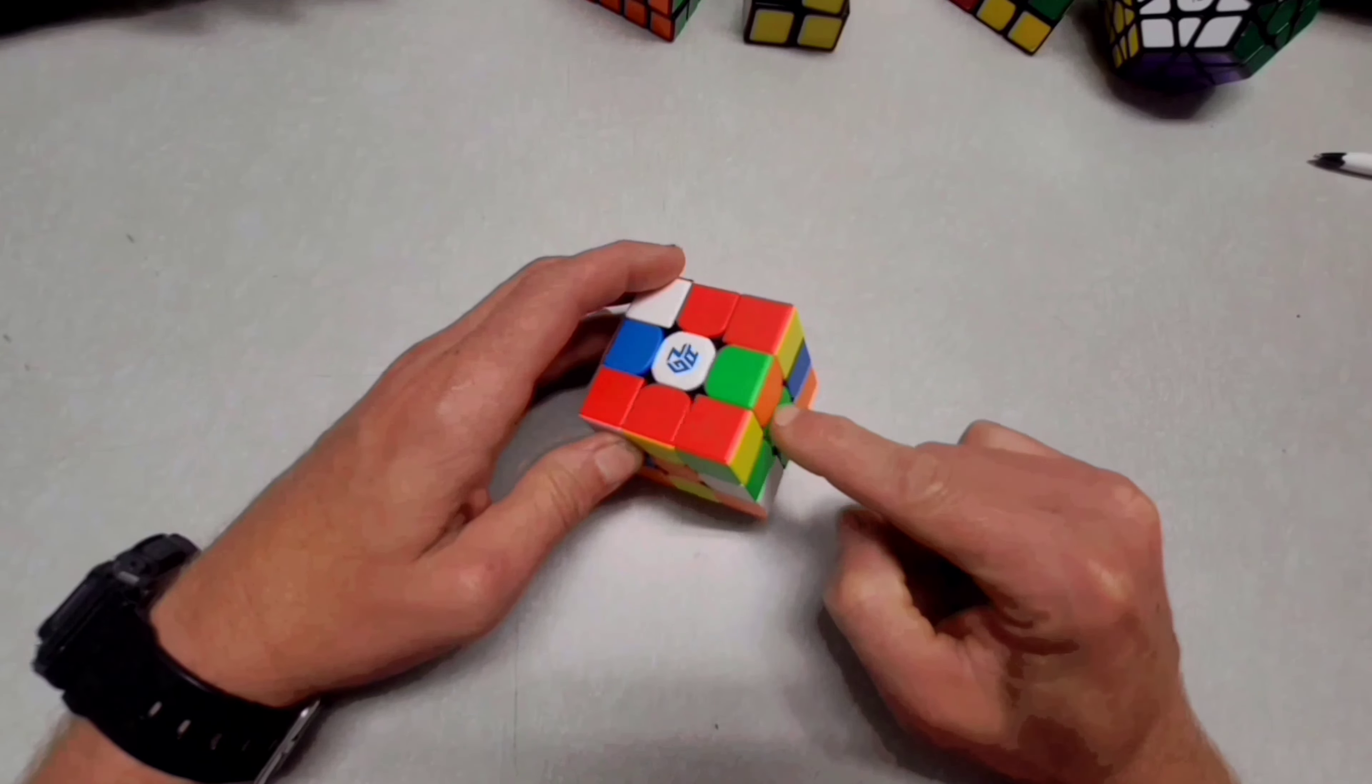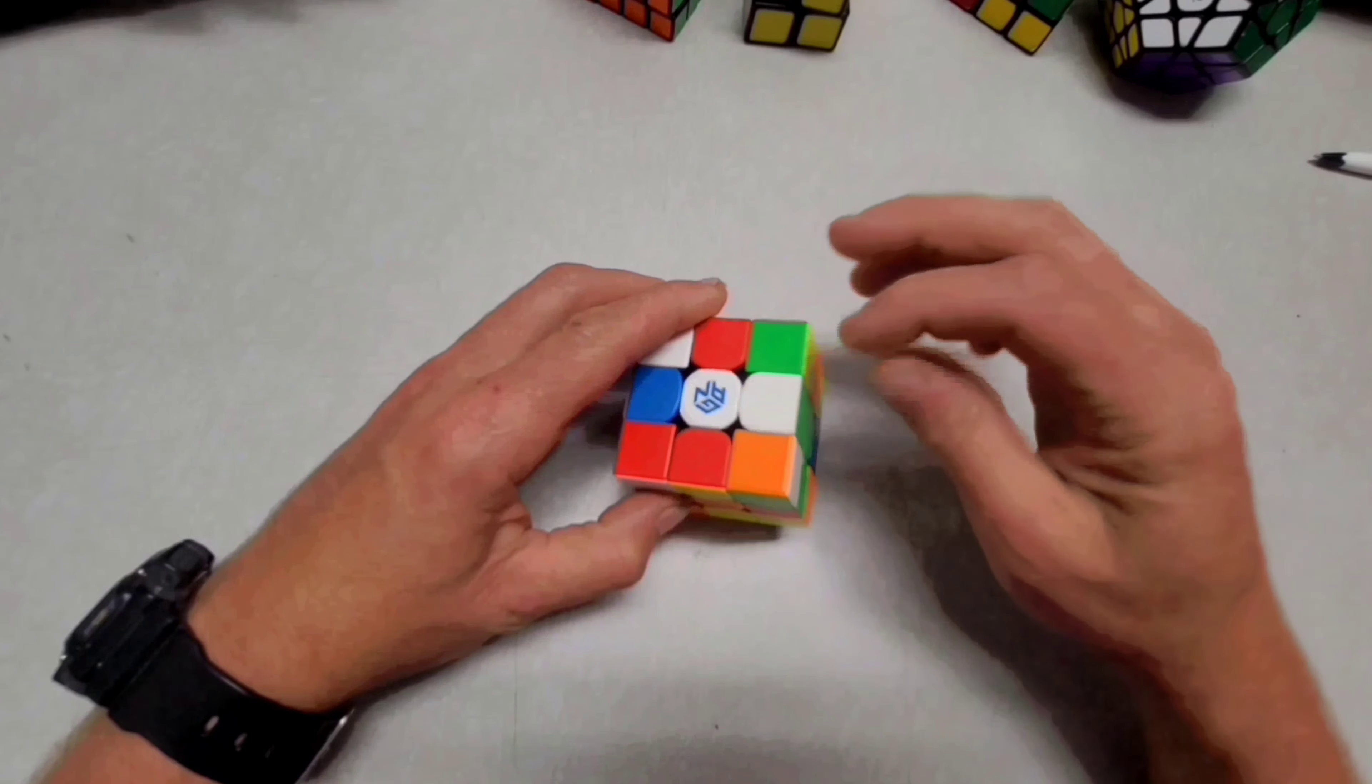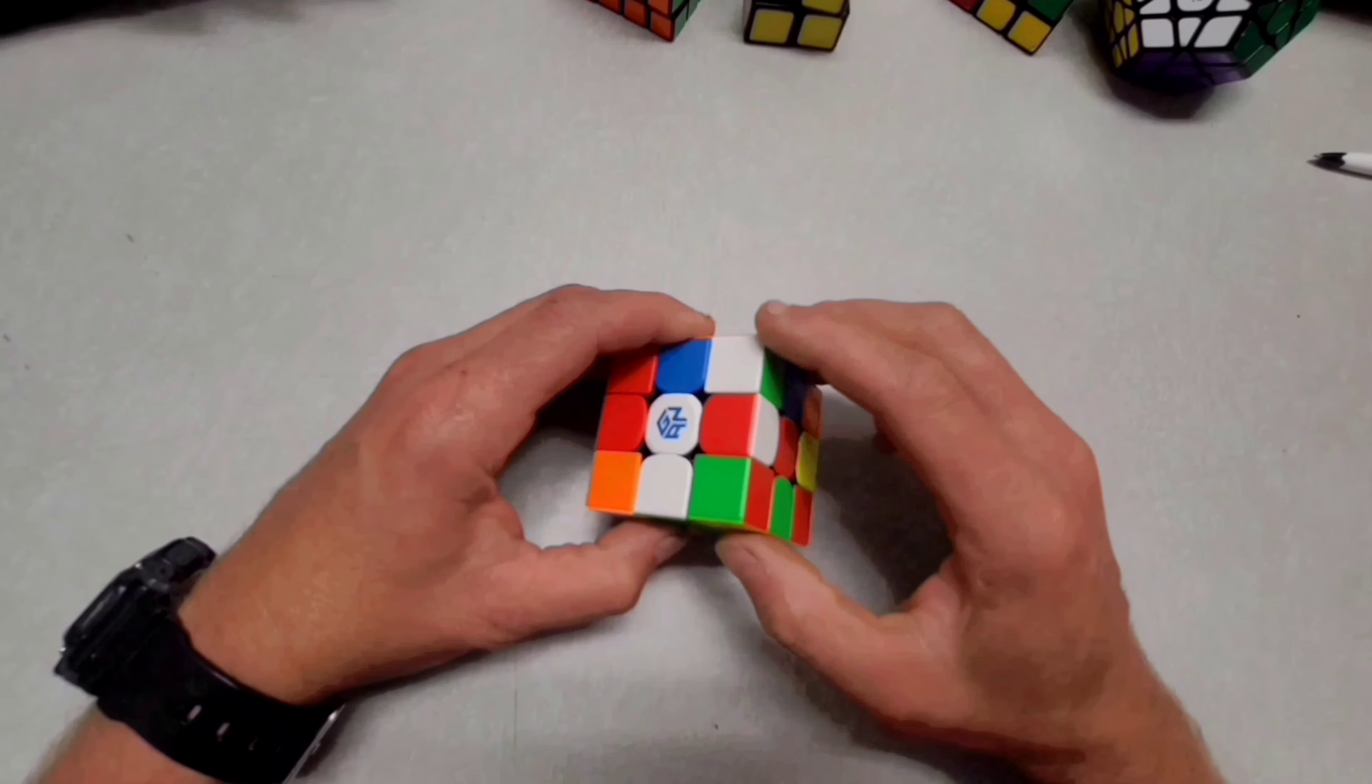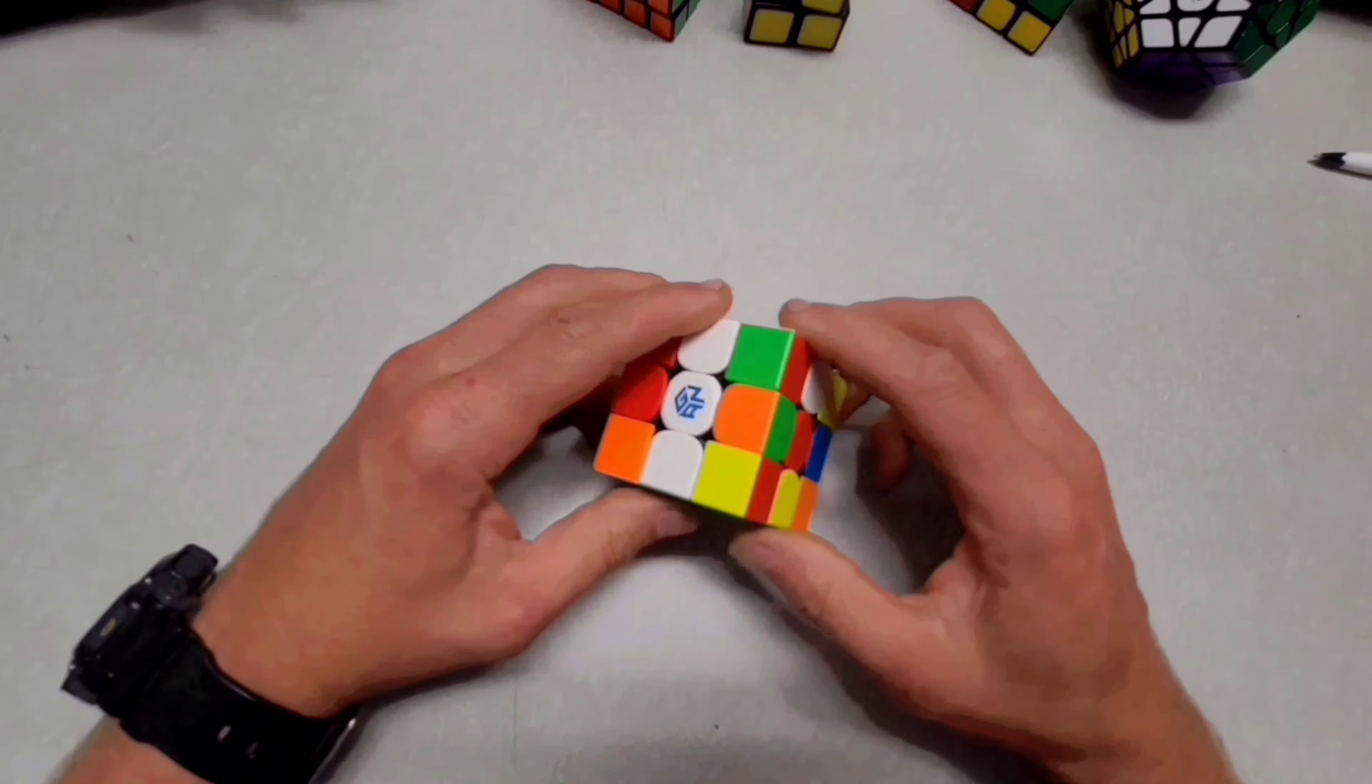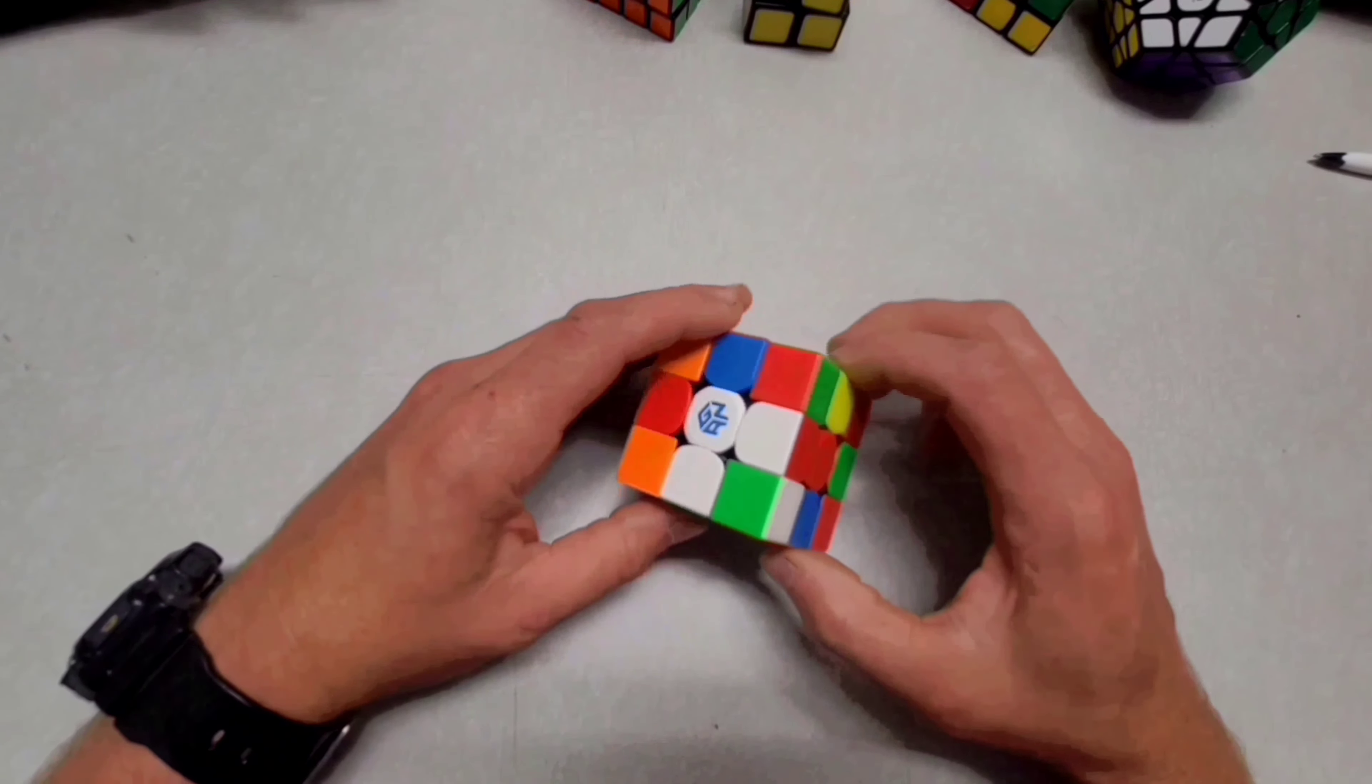Okay, so here's a white. So now I need another white right here. And the white is over here on the green. So see this white and green? I'm going to turn it up. White and green here.